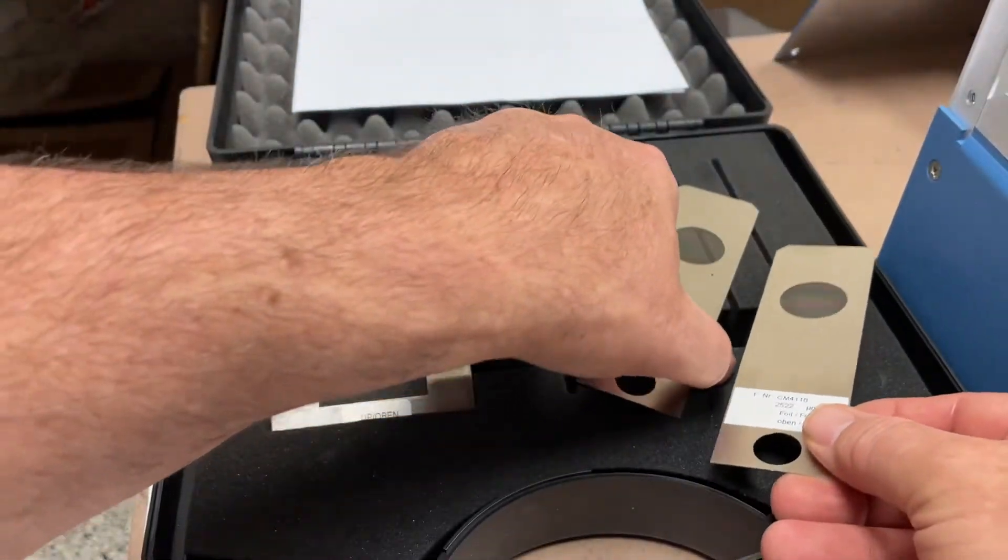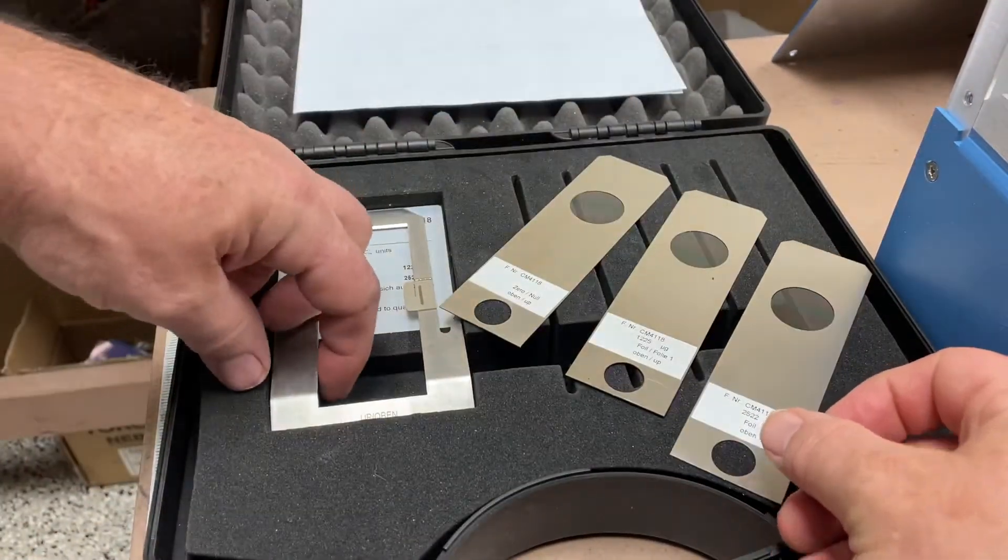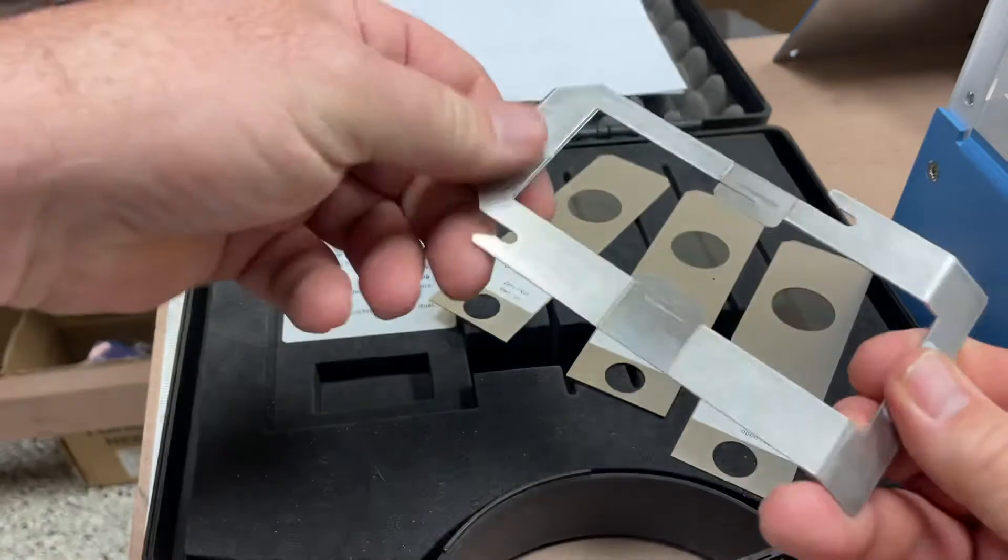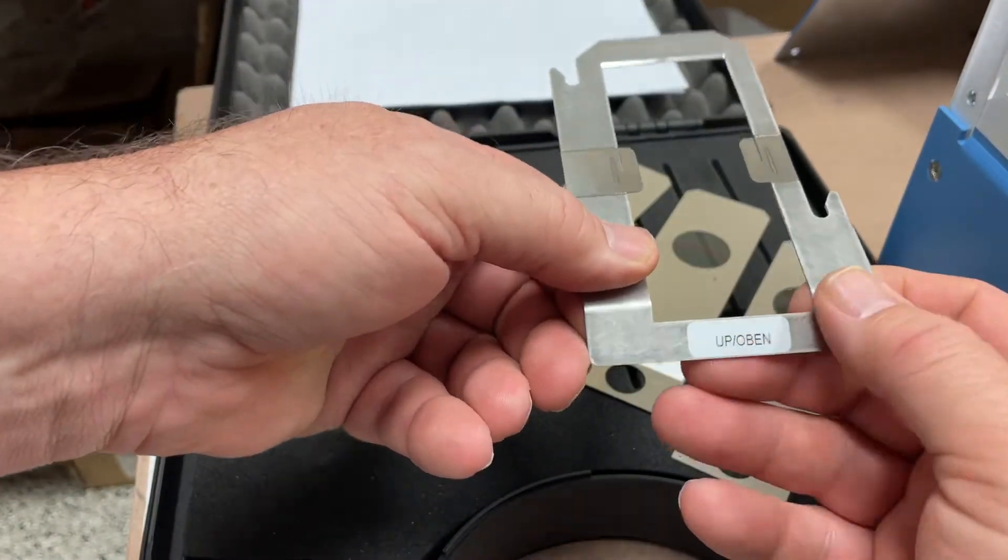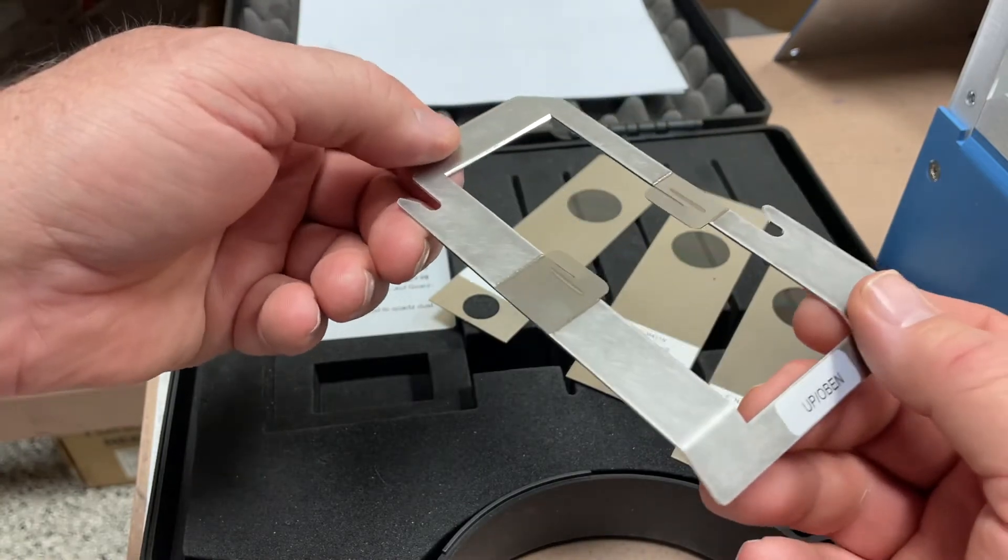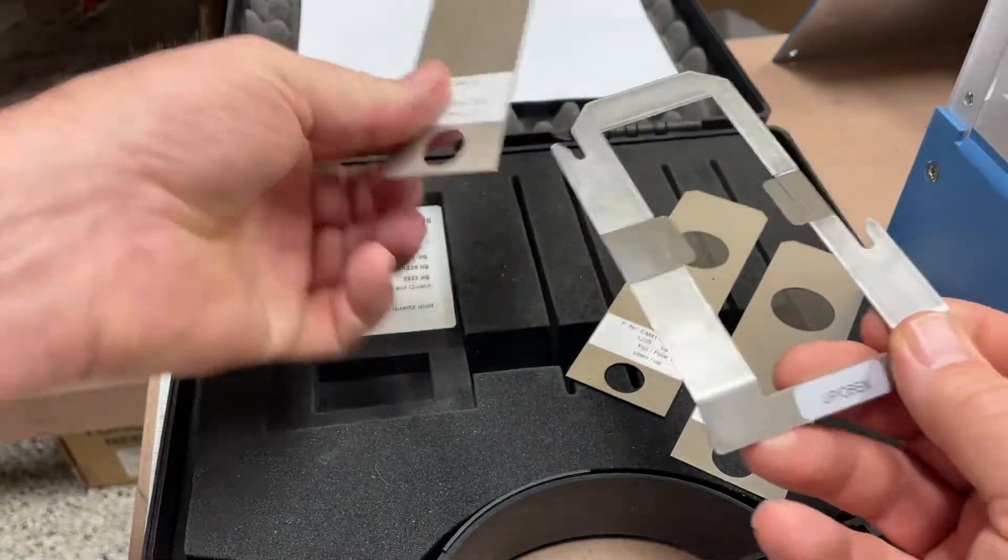These are the three foils that come in this kit, and it comes with this little bracket. On this bracket it says 'up,' so this means it needs to be positioned up in the detector.